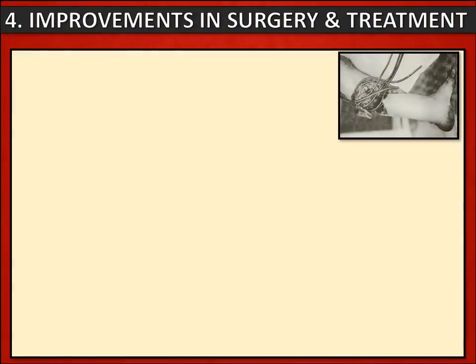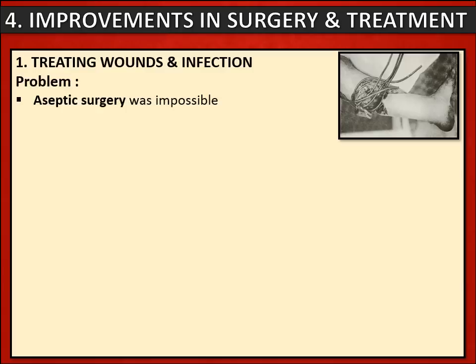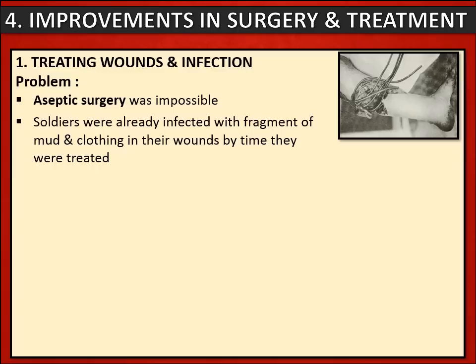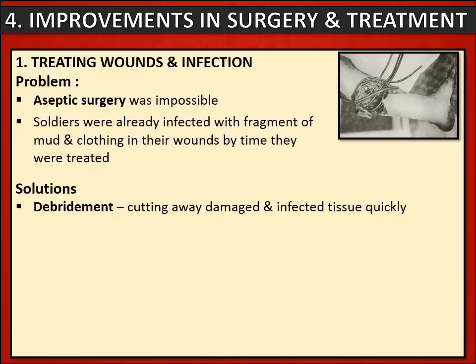Let's do an overview of the improvements in surgery and treatment. Let's start by looking at how the treatment of infection improved. There are two reasons why infection was a particular problem in surgery. Firstly, aseptic surgery was impossible. Another reason is that soldiers were already infected with fragments of mud and clothing in the wounds by the time they were treated. So surgeons had to find a way of dealing effectively with infection. One method they used was debridement, which is to cut away damaged and infected tissue from a wound. This needed to be done as soon as possible because infection could spread really quickly, and if any infected tissue had not been removed before the wound was stitched, the infection would just spread again.